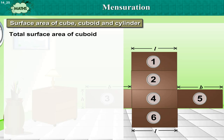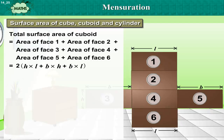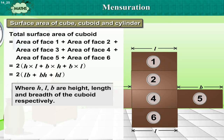Therefore, total surface area of cuboid is equal to area of face 1 plus area of face 2 plus area of face 3 plus area of face 4 plus area of face 5 plus area of face 6, which is equal to 2 into (H into L + B into H + B into L), which is equal to 2 into (LB + BH + HL), where H, L and B are height, length and breadth of the cuboid respectively.